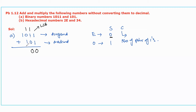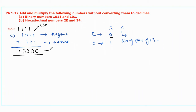Again we have an even number of 1s, so the sum will be 0, and the one pair means one carry is forwarded to the next bit position. Now we have a 1 directly, so we write it as is. This is the final sum.